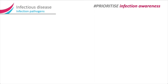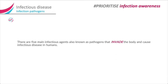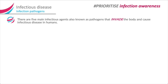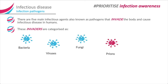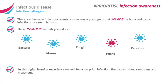Infectious disease — infection pathogens. There are five main infectious agents, also known as pathogens, that invade the body and cause infectious disease in humans. These invaders are categorised as bacteria, viruses, fungi, prions, and parasites. In this digital learning experience we will focus on prion infection — the causes, signs, symptoms, and treatment.